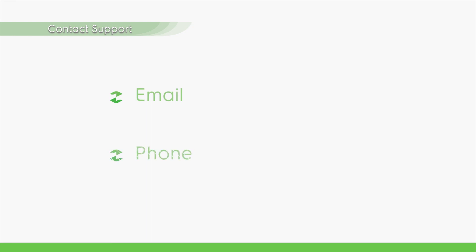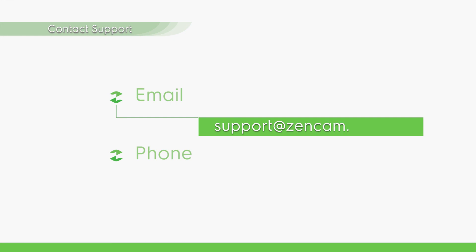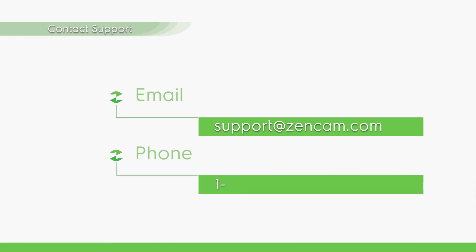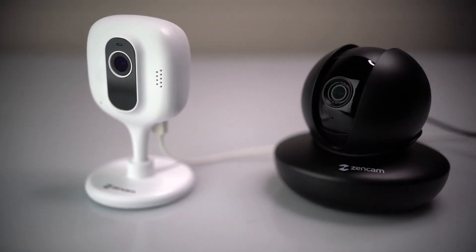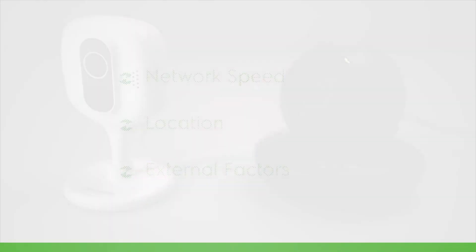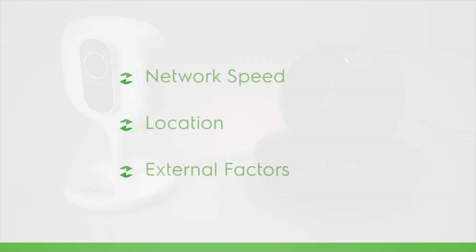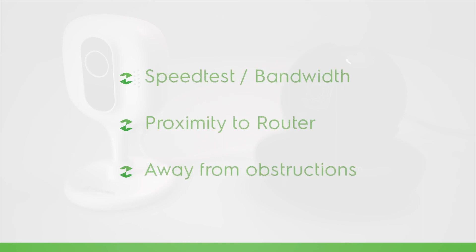If further assistance is needed to help resolve your Wi-Fi connectivity issue, please feel free to contact our support department directly and we will be happy to assist. You can email us at support@zencam.com or by giving us a call at 1-888-212-7538. We hope this video has helped you learn about the most common causes of network connectivity issues with ZenCam cameras and provided a few solutions to resolve the issue.